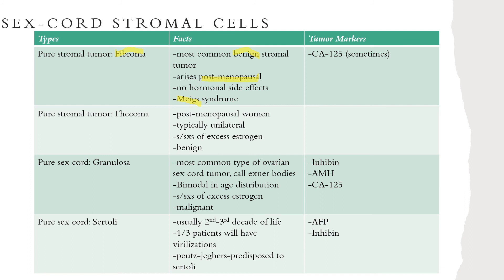Another pure stromal tumor is the thecoma. This also presents in postmenopausal women, typically as unilateral, and these patients will have signs of estrogen excess. Estrogen excess manifests as endometrial hyperplasia in 15 to 20 percent of cases, and endometrial carcinoma in 25 percent of cases. Most of the time, thecomas will behave in a benign nature.